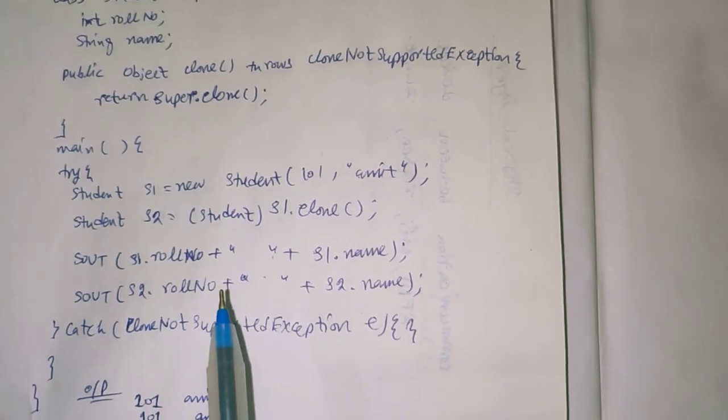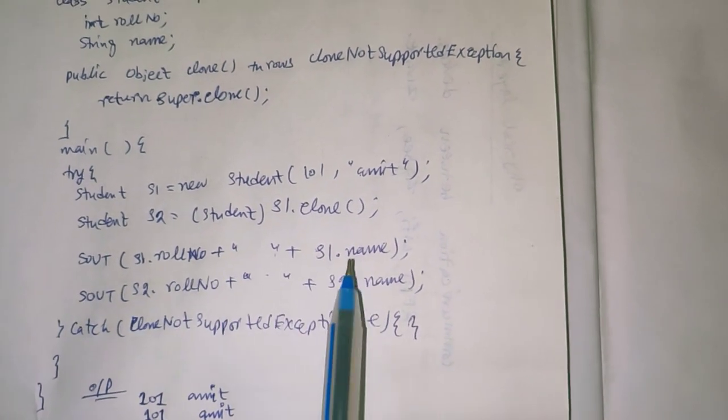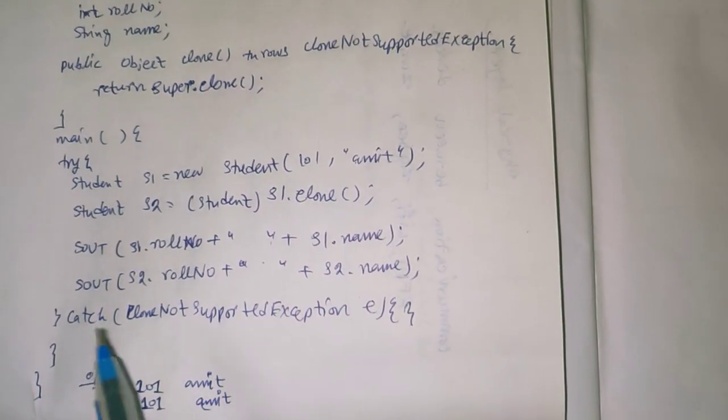s1 roll number, s2 roll number same. s1 name, s2 name is also same. Same output will be printed. This is the catch block.